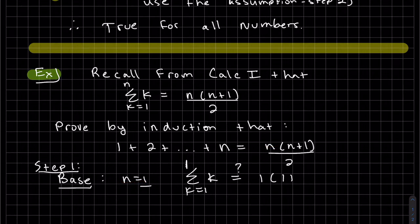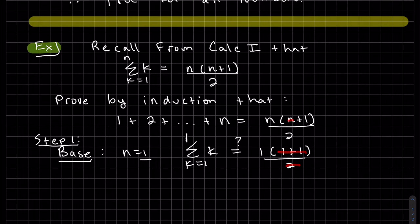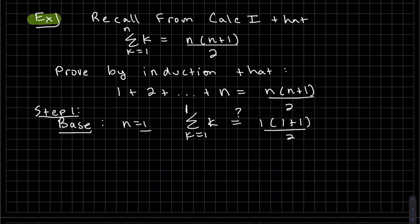So it's 1, and then 1 plus 1 over 2. So let's work out both sides. On the left, k equals 1. And we've come to the top number, so we're done. On the right, we get 1. So therefore, it's true for our base. So we've done our base.